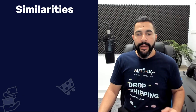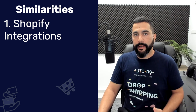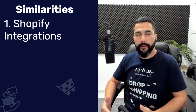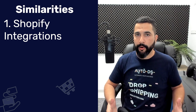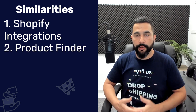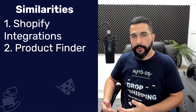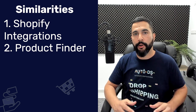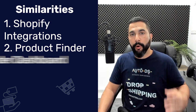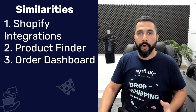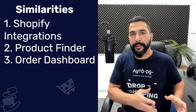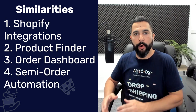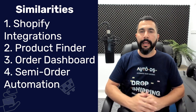So which is better? What are the main differences? Here are the main differences and similarities between Spocket and Oberlo. The main similarities are: they both integrate with Shopify stores, they both support finding products to sell, and they both have an orders dashboard where you can see all the orders that came into your dropshipping store. They both also support semi-order automation.